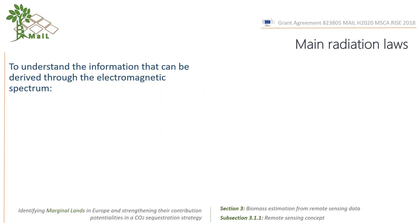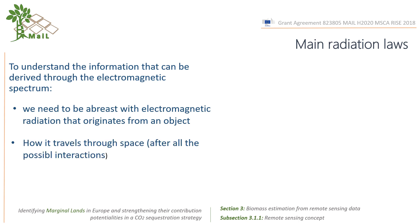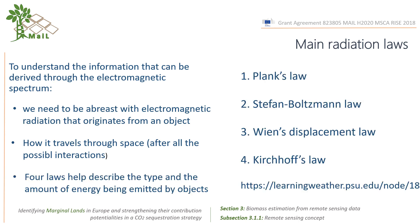Starting from what can be derived through the electromagnetic spectrum, we need to be abreast with electromagnetic radiation that originates from an object and how it travels through space after all the possible interactions. Four laws help describe the type and the amount of energy being emitted by objects: Planck's law, Stefan Boltzmann's law, Wien's displacement law, and Kirchhoff's law.